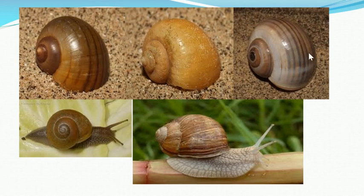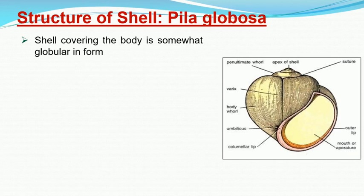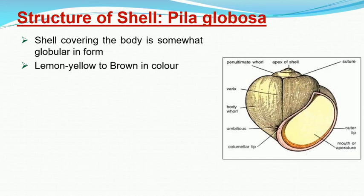Here you can see different color variations in the Pila shell. The shell is the protective outer covering of these molluscs. It is somewhat globular in shape and about 60 millimeters wide. The color varies from yellow to light brown to dark brown, depending on the habitat of that particular Pila snail. It is always univalved, meaning it is formed of a single piece.